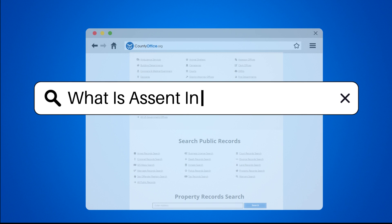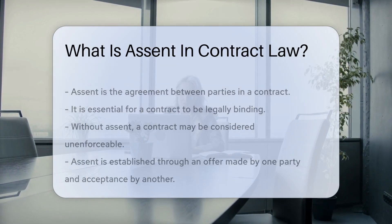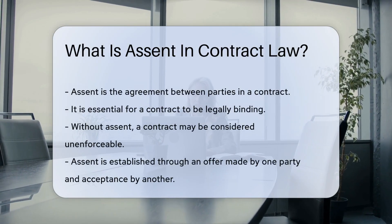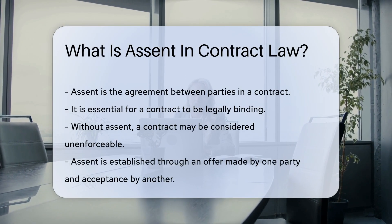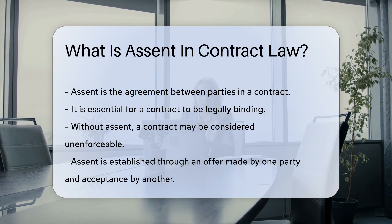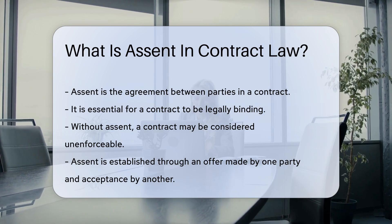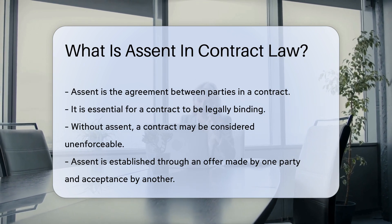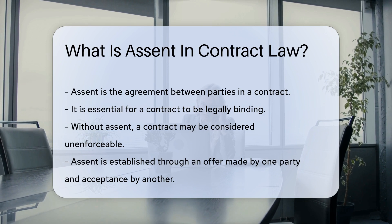What is assent in contract law? Assent refers to the agreement between parties in a contract. It is a crucial element for a contract to be legally binding. Without assent, a contract may be deemed unenforceable.